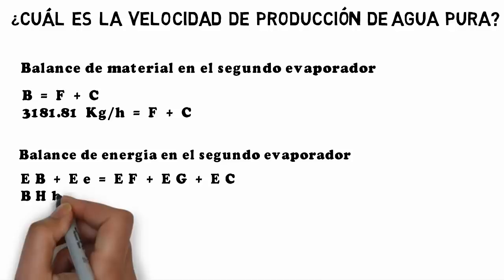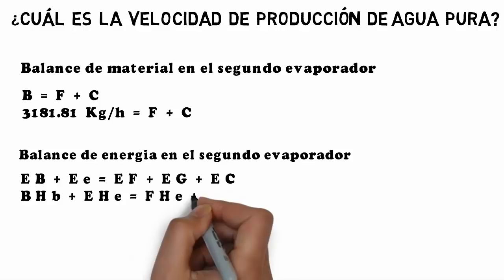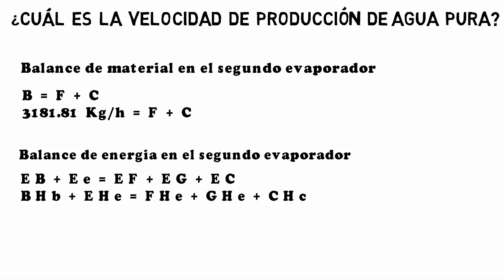Taking into account the enthalpies and flow rates at each point, we have the following equation: B·HB + E·HE = F·HF + G·HG + C·HC.